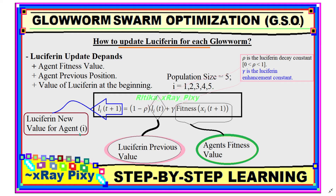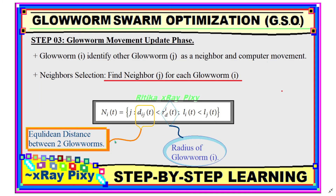Here i represents the agents. With five agents in the search space, the value for i ranges from one to five. So for each agent we will update the luciferin value for each glowworm.